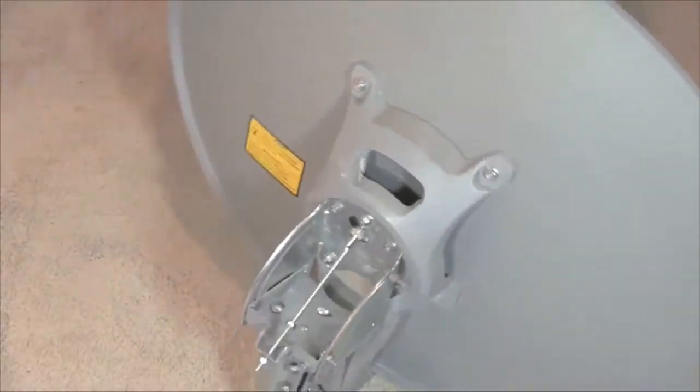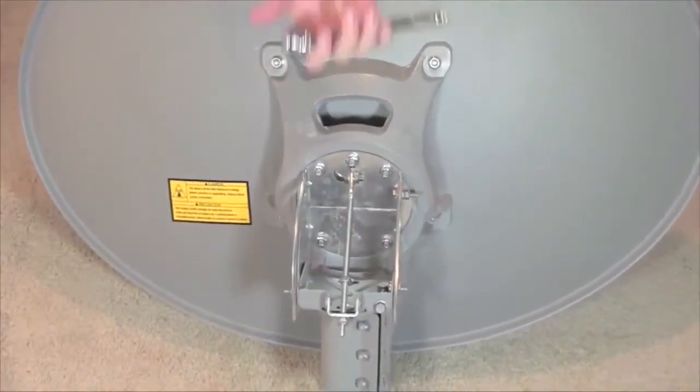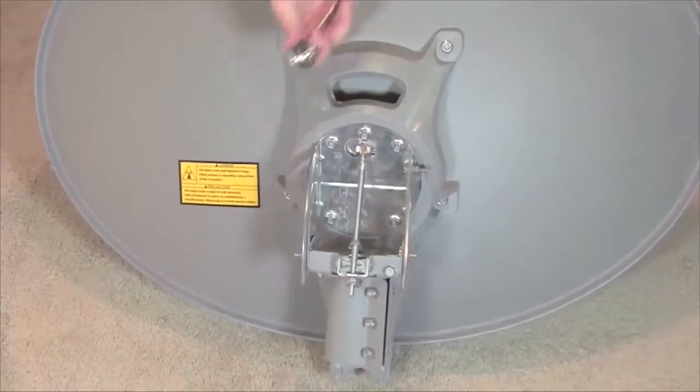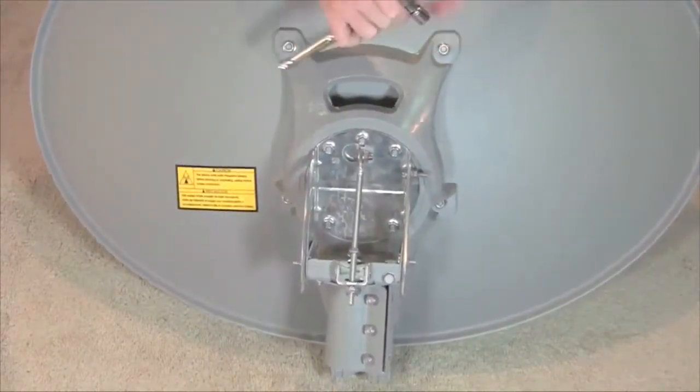Here is another look at the assembly so far. Use a half inch wrench to tighten the bolts, securing the reflector to the reflector bracket. This video uses a socket wrench with a half inch socket.